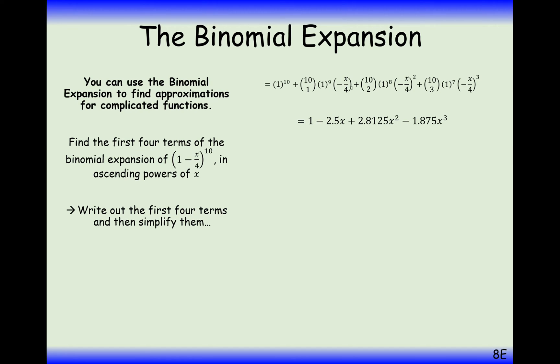Simplify your final answer and you may get some fractions here because we've got divisors of 4 here. And we get 1 minus 2.5x plus 2.8125x squared minus 1.875x cubed. So that's the answer to part A effectively of this question.